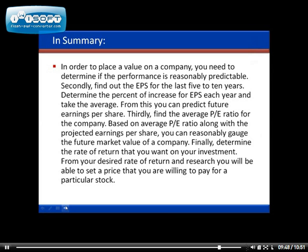In summary, to place a value on a company: first, determine if performance is reasonably predictable. Second, find EPS for the last five to ten years, determine the average percent increase or decrease, and use it to reasonably predict future EPS. Third, find the average P/E ratio — combined with projected EPS, this lets you gauge the future market value. Finally, determine your desired rate of return, which lets you set the price you're willing to pay for a particular stock.